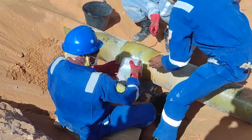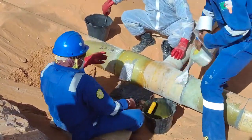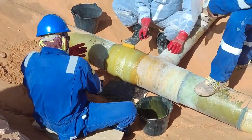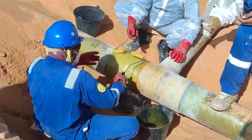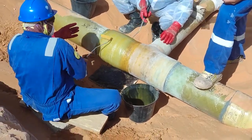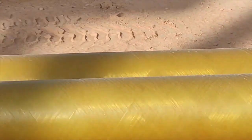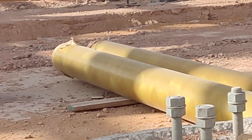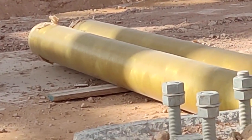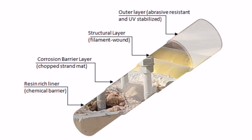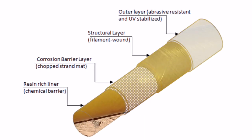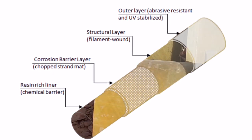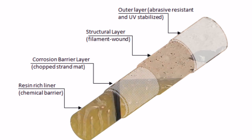Which one is better, HDPE or FRP? Compared to FRP, HDPE products have poorer weather resistance and lower heat resistance. The heat resistance of high density polyethylene is 60 to 70 degrees centigrade, while the heat resistance of FRP is 100 to 120 degrees centigrade. Therefore, HDPE pipes cannot be used for hot water pipes. As you can see in the picture, the carrier layer which carries the liquid or gas is the resin rich liner, which acts as a chemical barrier.